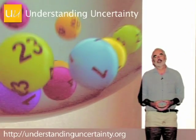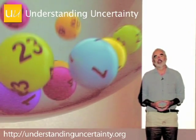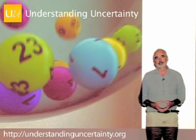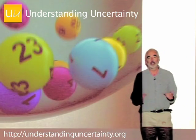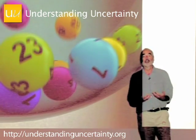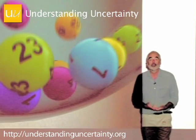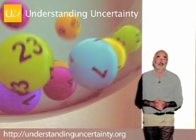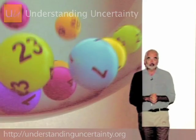This is about the uncertainties in the UK National Lottery. There are 49 balls and six balls are drawn to form the jackpot numbers.